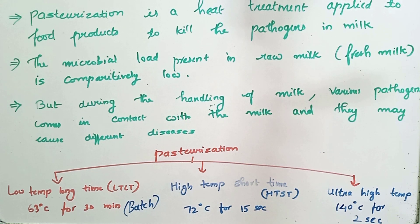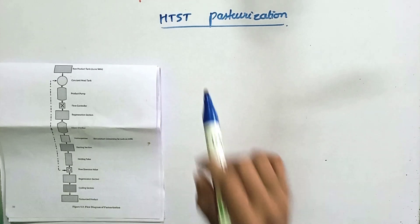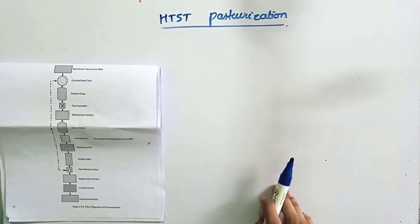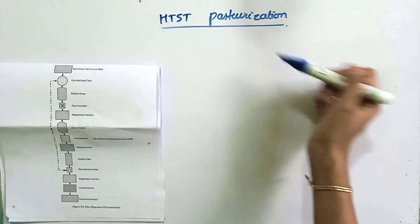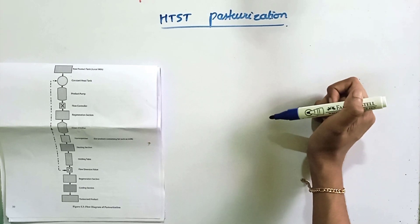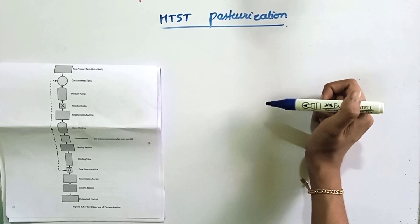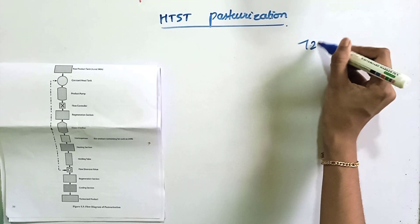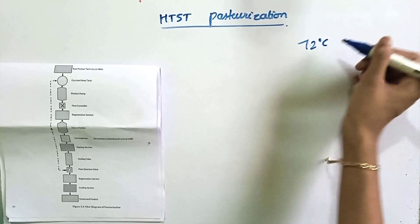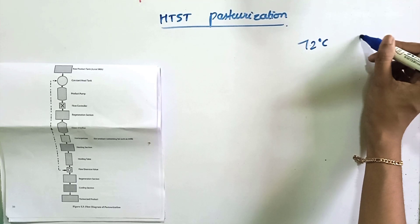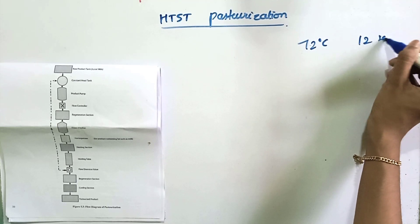Next we are going to study about HTST pasteurization in detail. In HTST pasteurization, we apply a high temperature of 72 degrees Celsius for a time period of 15 seconds.